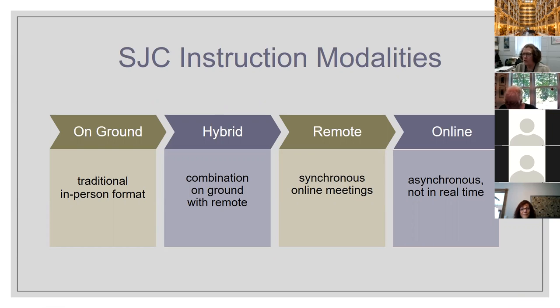These are the definitions that are on the reopening page provided by teaching and learning. On-ground is your traditional in-person format. Hybrid is your combination of on-ground with remote. Remote is the synchronous online meeting, and online is the asynchronous, not in real-time classes. Every one of our classes is in one of these, presumably.